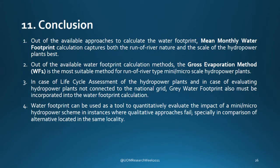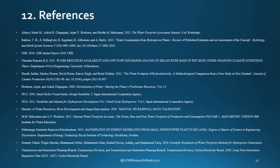In conclusion, out of the methods available for water footprint calculation, the mean monthly water footprint captures both the ROR nature and the scale of the hydropower plants the best. Out of the available water footprint methods, the gross evaporation method is the most suitable for ROR mini and micro scale hydropower plants. For life cycle assessment and for evaluating hydropower plants not connected to the national grid, grey water footprint must also be incorporated. Water footprint can be used as a tool to quantitatively evaluate the impact of a mini or micro hydropower scheme in instances where qualitative approaches fail, especially in comparison of alternatives located in the same locality. Thank you.